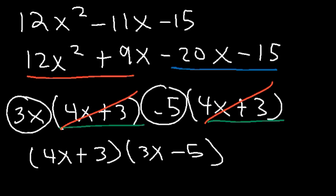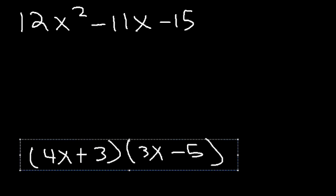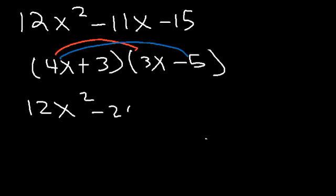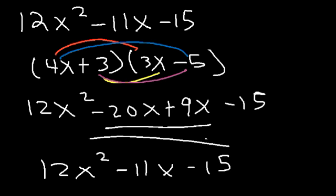So this is the answer. And let's confirm it by foiling these two terms. So 4x times 3x is 12x squared. 4x times negative 5 is negative 20x. 3 times 3x is 9x. And 3 times negative 5 is negative 15. And now let's add these two terms. So this is going to give us the original expression.